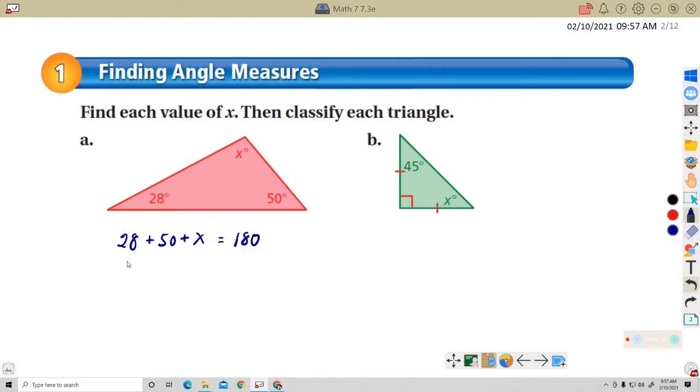Let's simplify the left side. 28 plus 50 is 78. And now to solve for x, I subtract 78 from both sides. I'll use my inverse operations. So 78 minus 78 cancels each other out. So x equals 102. And it doesn't say to find the measurement, it just says find the value of x. So I can just leave it like this, x equals 102.